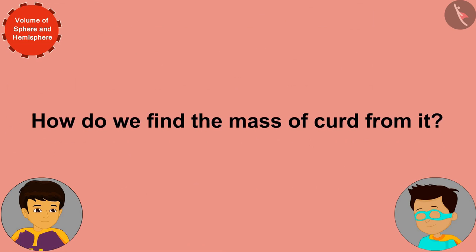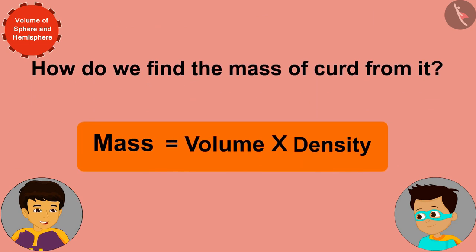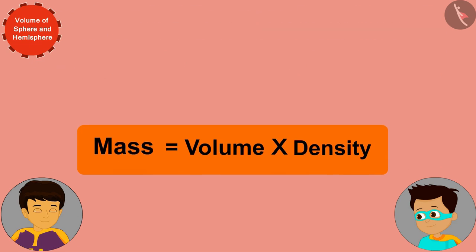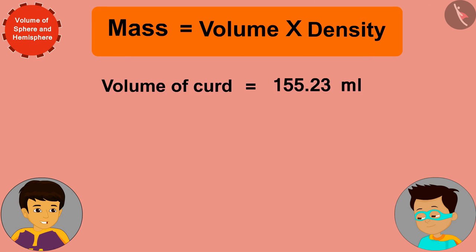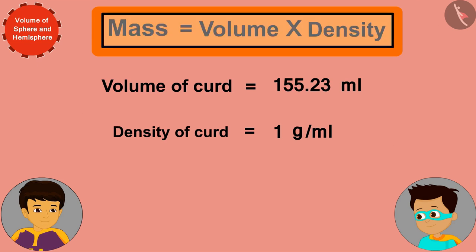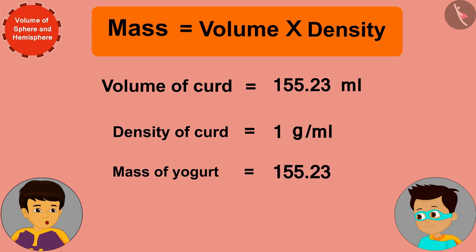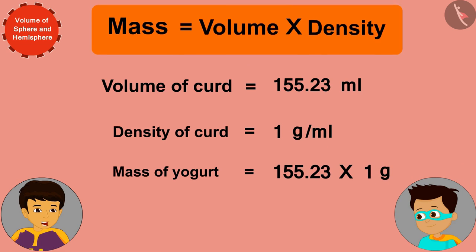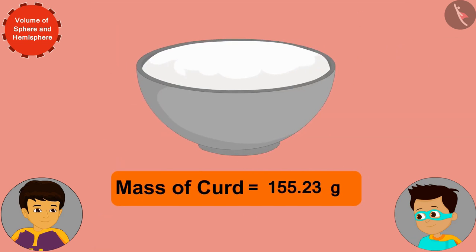But how do we find the mass of curd from the volume? Mass is the product of volume and density. We know the volume of curd is 155.23 milliliters and the density of curd is about 1 gram per milliliter. Multiplying these gives us the mass of the curd.